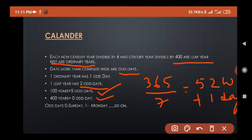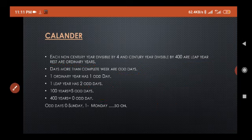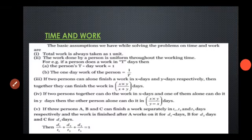Now odd days are zero for Sunday, one for Monday, two for Tuesday, three for Wednesday, likewise for Saturday we have six odd days.